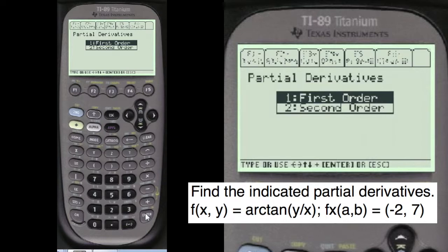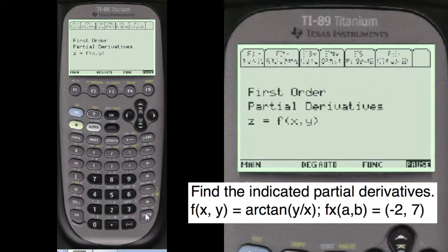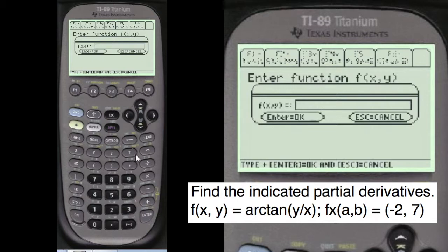I program first order or second order. I'm going to do first order in this problem. Z equals F to the X to the Y. We're going to enter our function. The function given is, you have to press alpha before you enter anything into these entry lines in my programs.